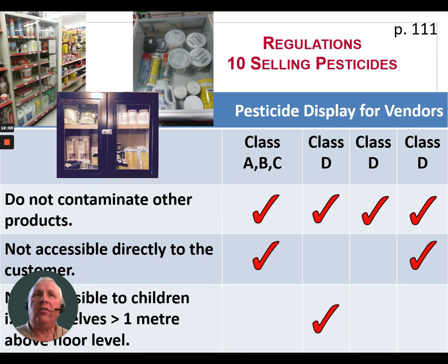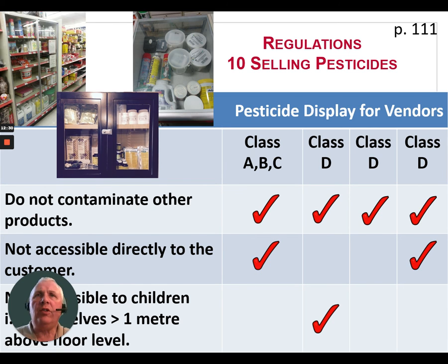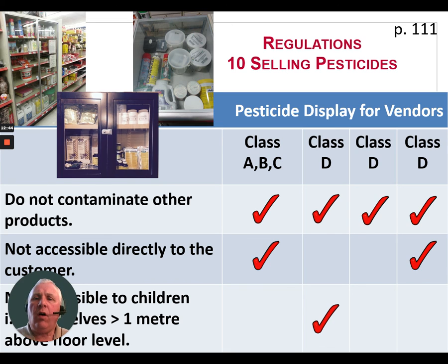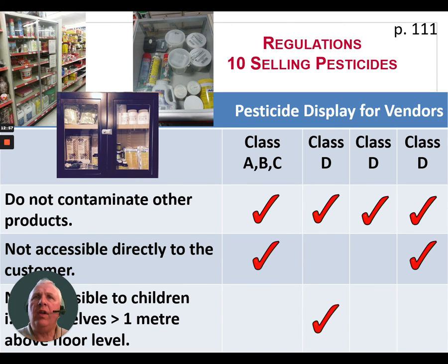When it comes to display of pesticide products, depending on classification, for Class A, B, C, and D, the pesticide must not contaminate other products — including feed, food, or clothing. For Class A, B, and C, the products must not be directly accessible to the customer — they must be kept away from the general public. Class D products may be on an accessible shelf, such as at a hardware store, but cannot be accessible to children — ideally placed on shelves one meter above the floor. Some pictures show storage locked away behind glass, where the general public cannot reach Class A, B, or C products.